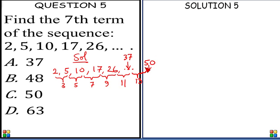So 50 is the 7th term. If you look at it this way: term 1, term 2, term 3, term 4, term 5, term 6, and then term 7. So the fifth term is 26 and the seventh term is 50. The correct answer is option C.